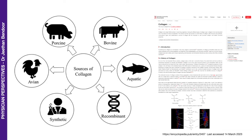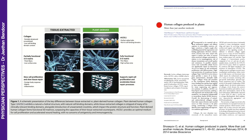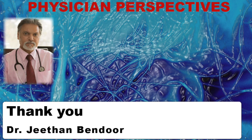Looking at sources of collagen as supplements, the main sources are avian, porcine, bovine, or aquatic. There are no vegan or vegetarian sources yet. Collagen builders exist but don't really provide the amino acid sources required for collagen synthesis in the body. This can be overcome by making synthetic collagen or using recombinant technology, which will help plants make collagen for us — as demonstrated in a recently published paper on human collagen produced in plants using recombinant technology. Thank you.